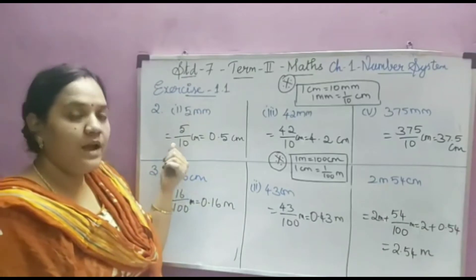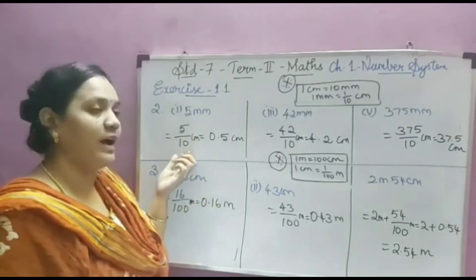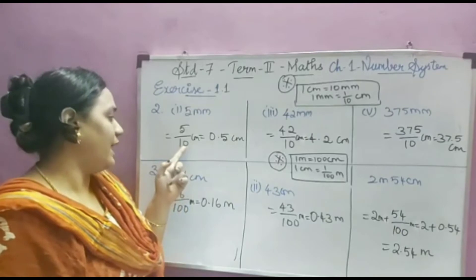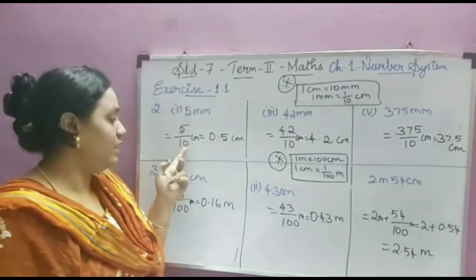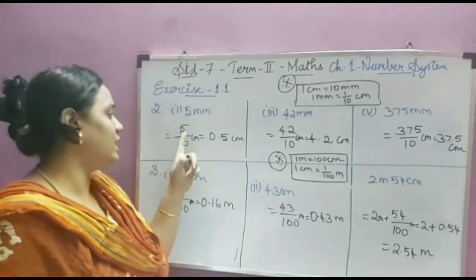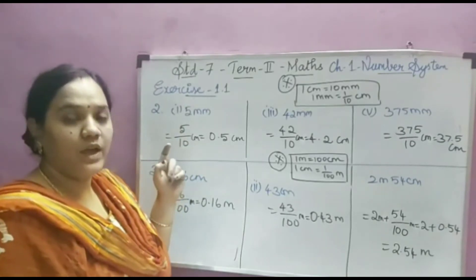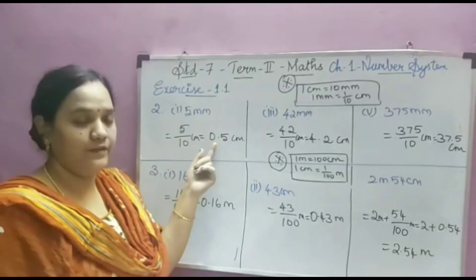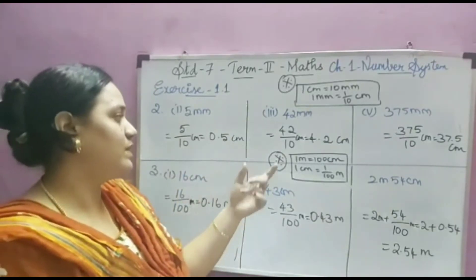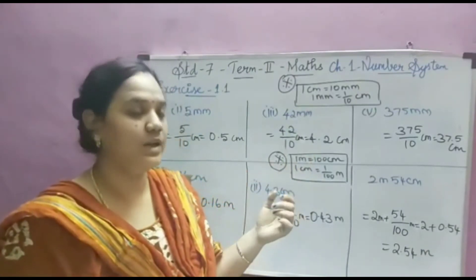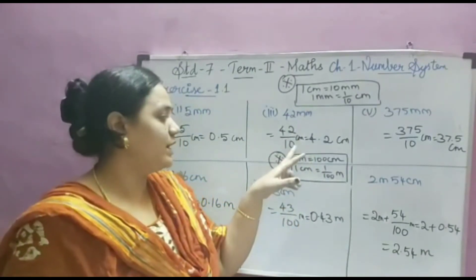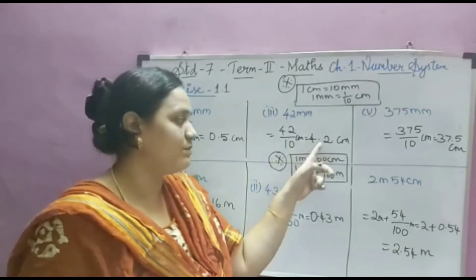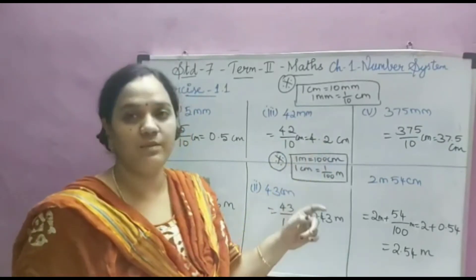In my last video I explained how to divide numbers by 10, 100, and 1000. We use the same procedure here. I have 10 in the denominator — how many zeros are in 10? One zero. So I have to keep the point one digit before. I kept the point before 5, so my answer is 0.5 centimeter. Same for 42 millimeters divided by 10: I keep the point before one digit, so 4.2 centimeters is the answer.